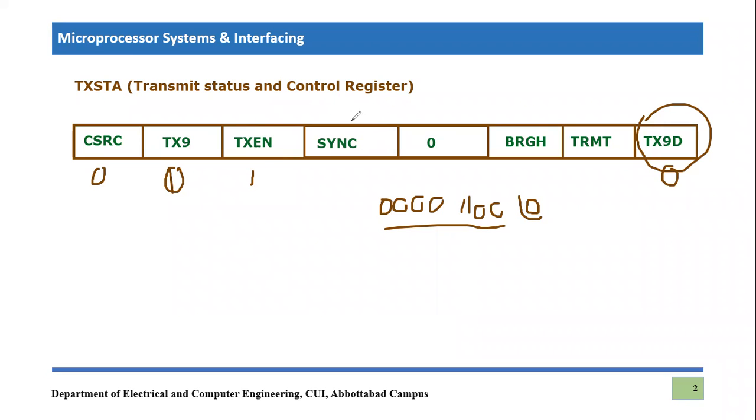So the fourth bit is basically sync bit and sync bit is related to synchronization purpose and synchronization is involved always in synchronous communication. Since we are dealing with asynchronous, so this bit will be equal to zero. If you are going to program for synchronous serial port communication, then you will put here one, otherwise it will be zero. The fifth bit is zero by default. You don't need to change its status. It will always remain zero.